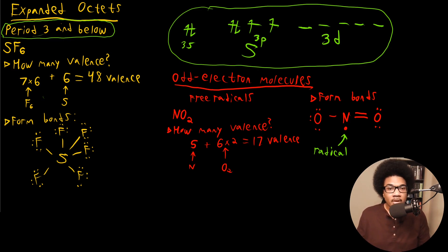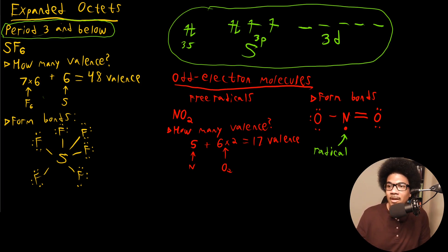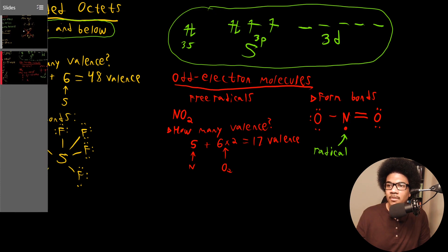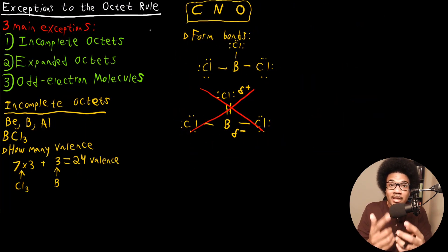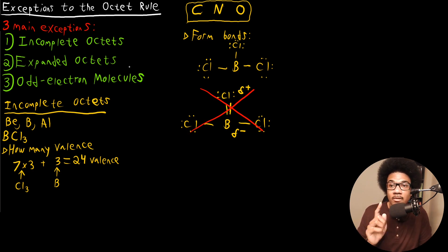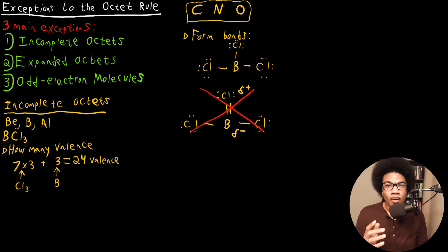This is by no means an exhaustive list of all the exceptions to the octet rule, but for this course, most of the exceptions you will encounter should fall into one of these three categories: either an incomplete octet, an expanded octet, or an odd electron molecule.